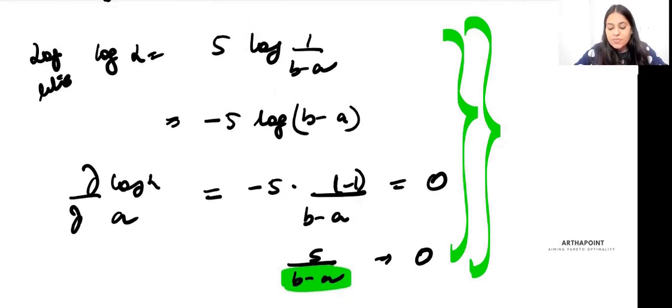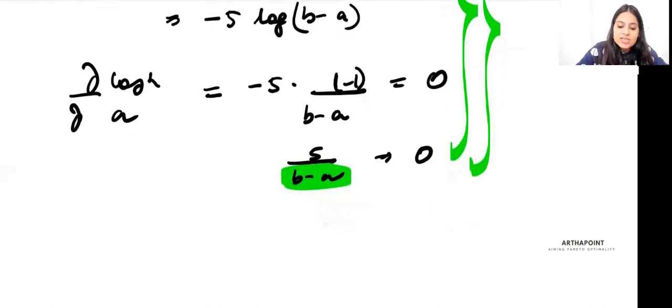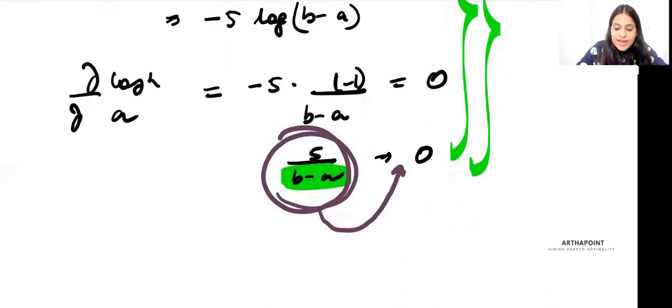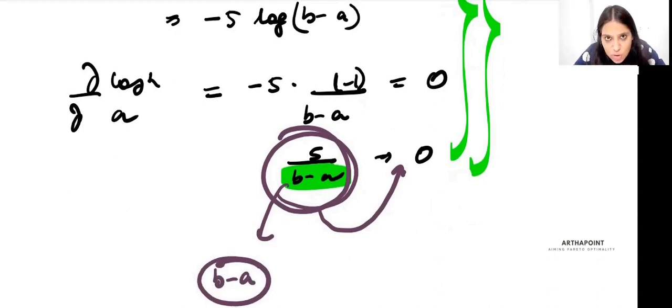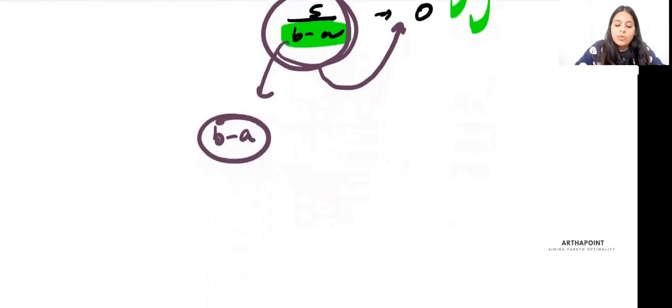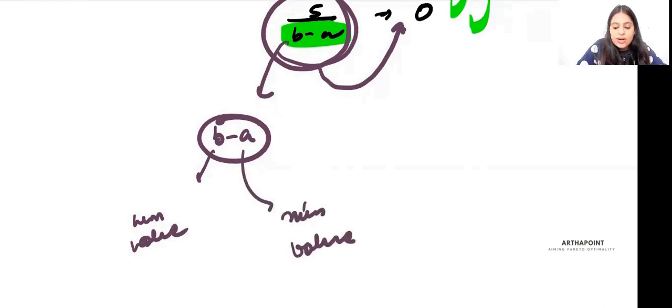In this case, you want to make this as close to 0 as possible. That's possible when B-A is as big as possible. So what we do is make B take the maximum value and A take the minimum value, so that B-A is automatically maximized.